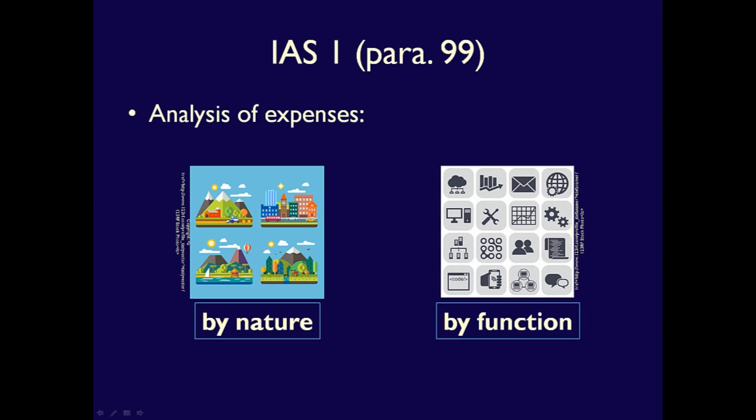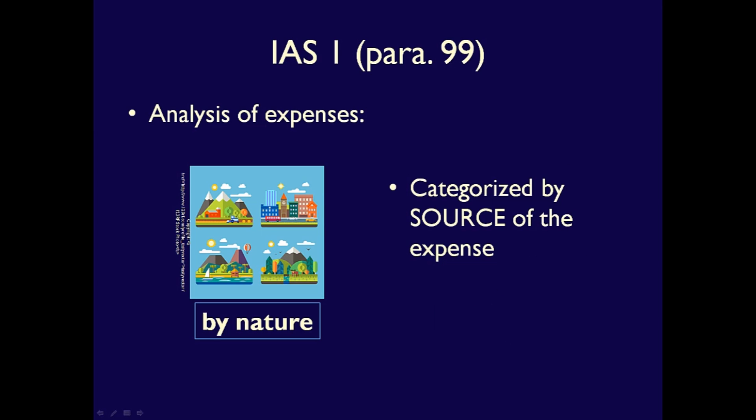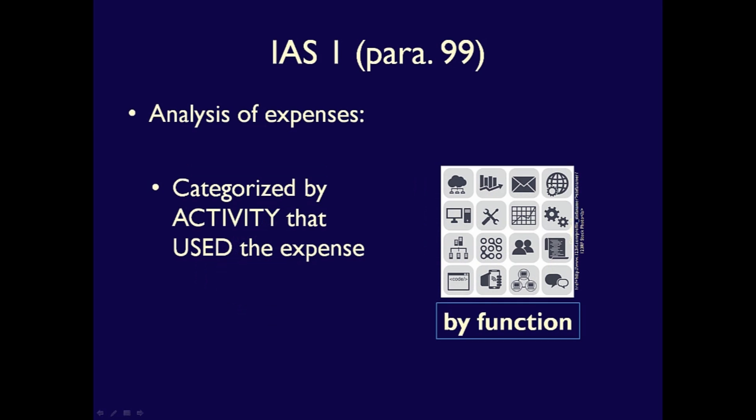What does this mean? By nature means that expenses are grouped based on the source of the expense — all similar sources are grouped together. By function means that expenses are grouped based on what the business used the expenses for, which can also be viewed as grouping costs by activity.